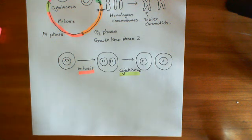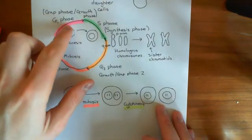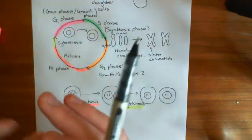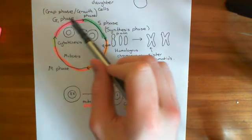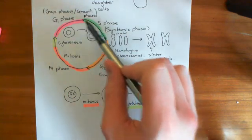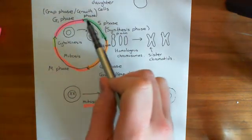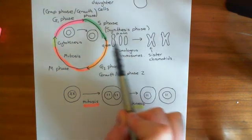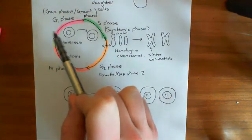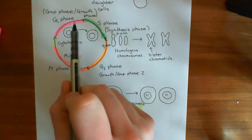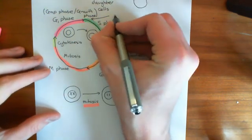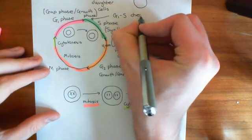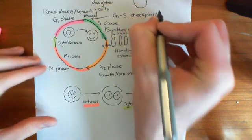We've now discussed the cell cycle. In the next video, we'll look at one of the key regulatory points: the transition from G1 phase to S phase. Copying the DNA is really the major start of the cell cycle — once you've copied your DNA, you're compelled to continue dividing. There's a key checkpoint called the G1/S checkpoint, and we'll discuss how the retinoblastoma protein regulates which cells pass through it.